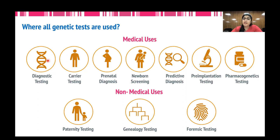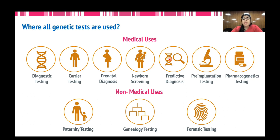Once we have identified the genetic defect in diagnostic testing, we can use this information to go ahead for carrier testing. Carriers are individuals who may not be showing symptoms at present but carry the genetic defect. Prenatal diagnosis is done in the fetal stage to look for congenital abnormalities and birth defects. Newborn screening is done on newborns in which a battery of monogenic Mendelian disorders such as inborn errors of metabolism can be tested. In case of predictive diagnosis, the risk of developing a particular disorder throughout a lifetime is estimated, such as risk of developing breast cancer. In case of pre-implantation testing, it is done during the in vitro fertilization procedure where embryos are tested for chromosomal anomalies and other anomalies before being implanted in the uterus.